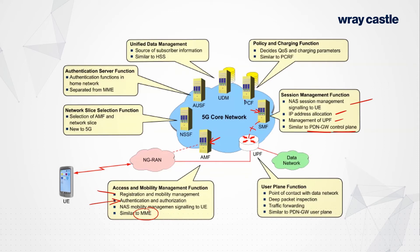We have a database in the network formerly known as the HSS — the Home Subscriber Server — now referred to as the UDM, or Unified Data Management. That is the place in the network where we store all subscriber data. It has a slightly different structure and does all the things you'd expect the HSS to do, though the back end may differ from what you have in your LTE network. Any network component that wants to know something about a subscriber contacts the UDM.